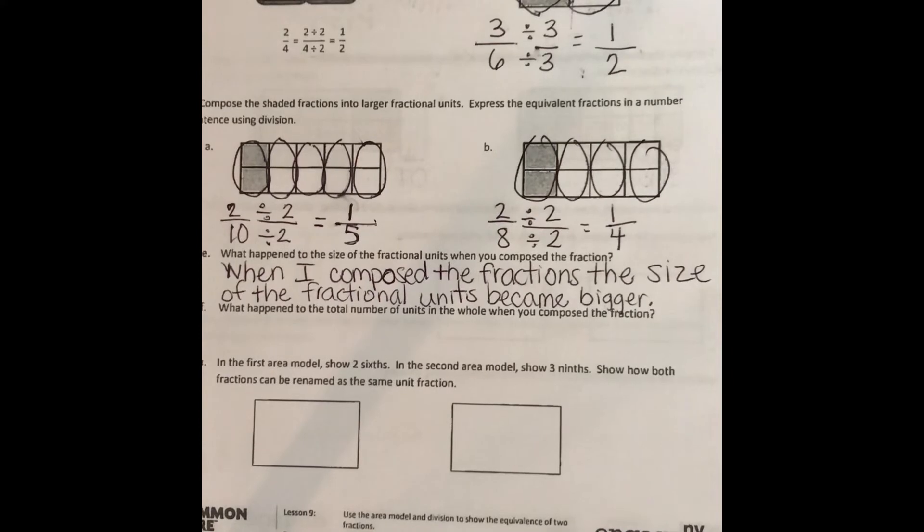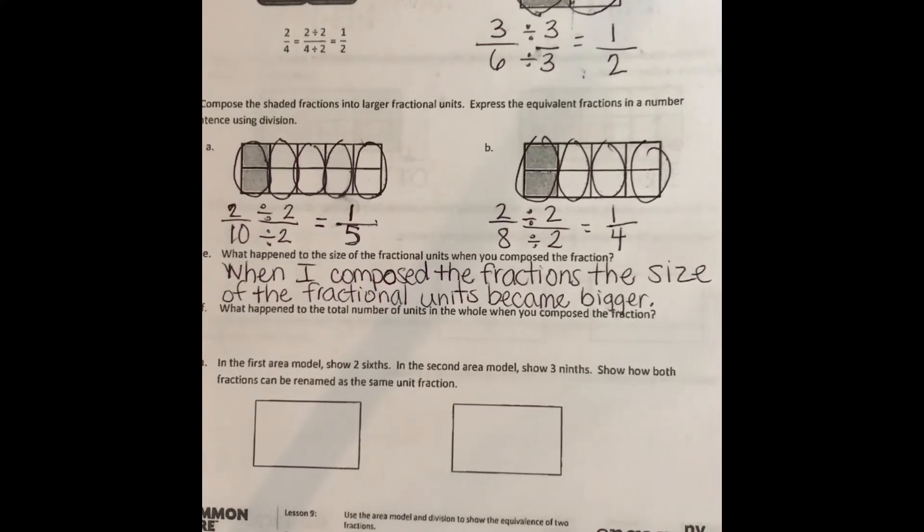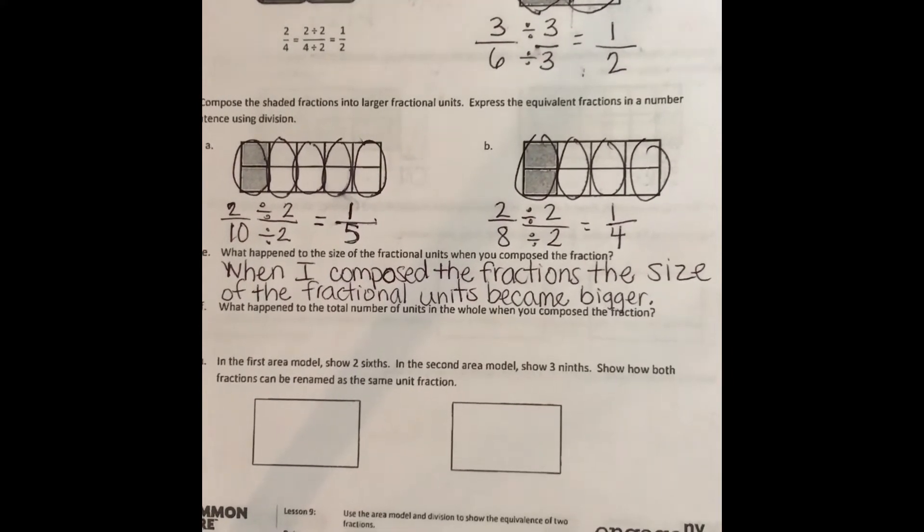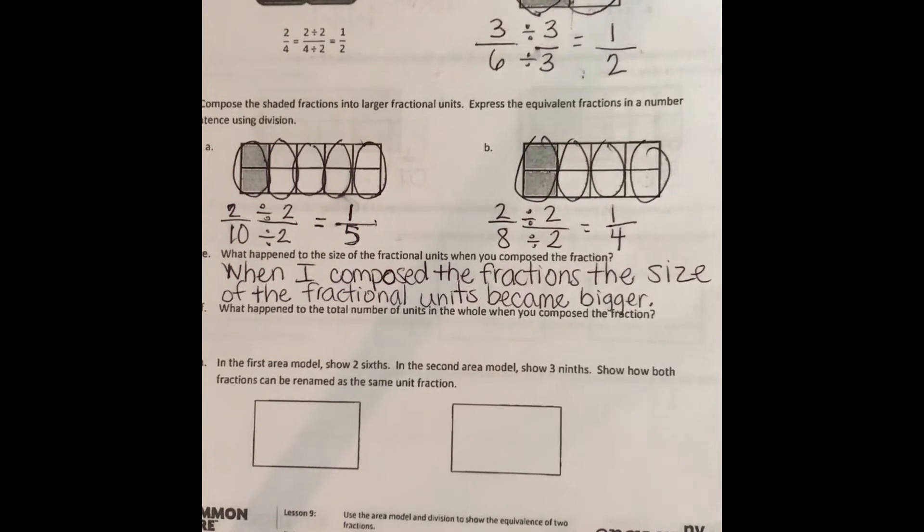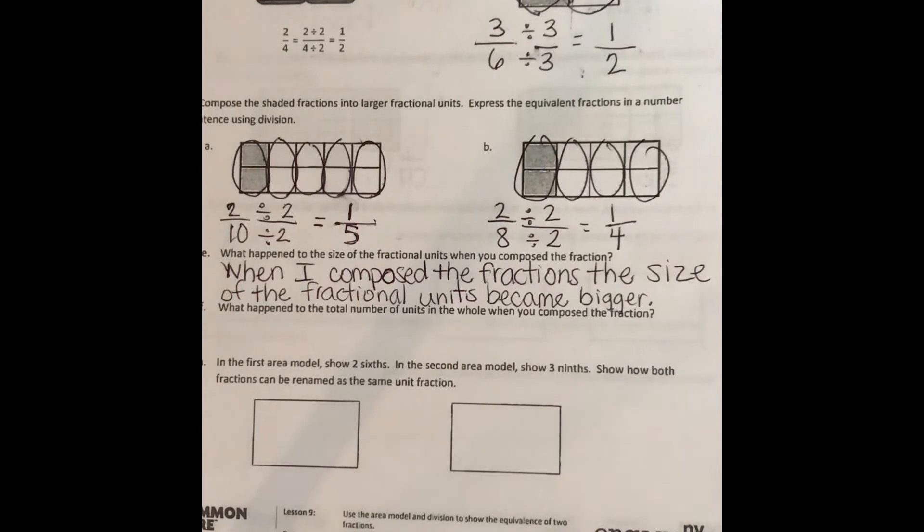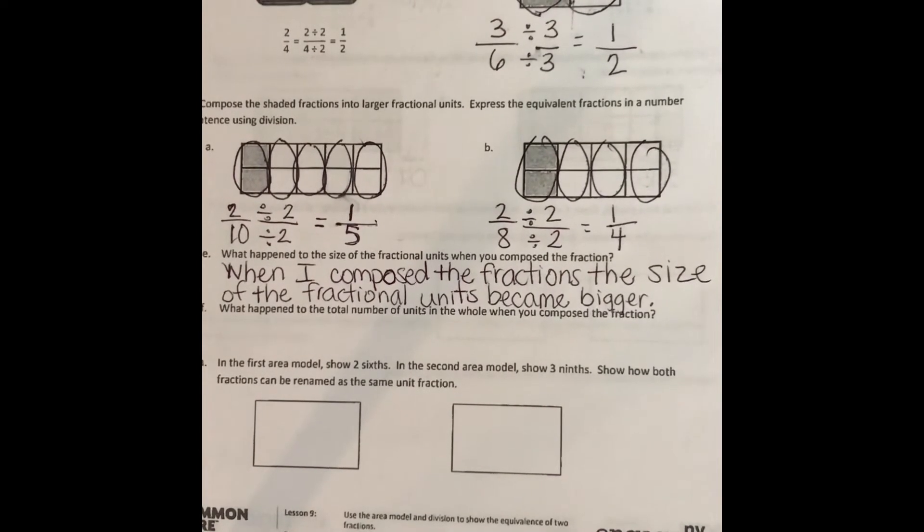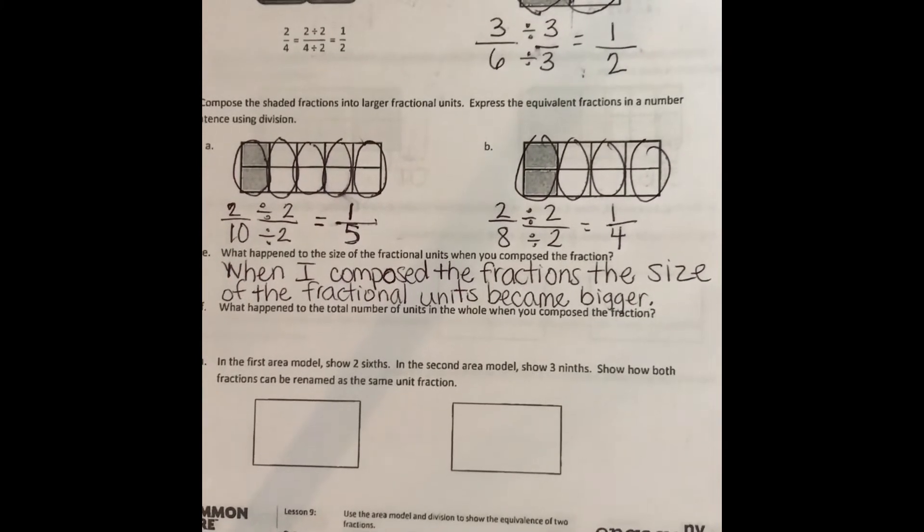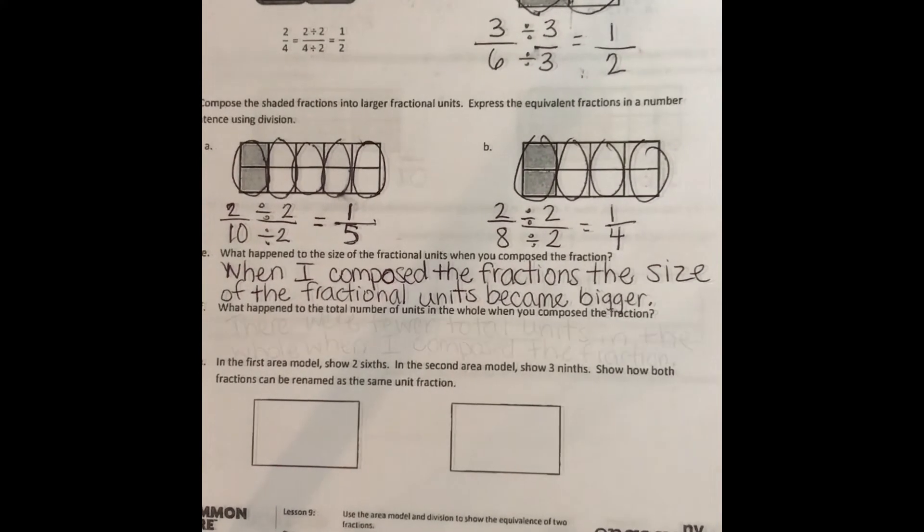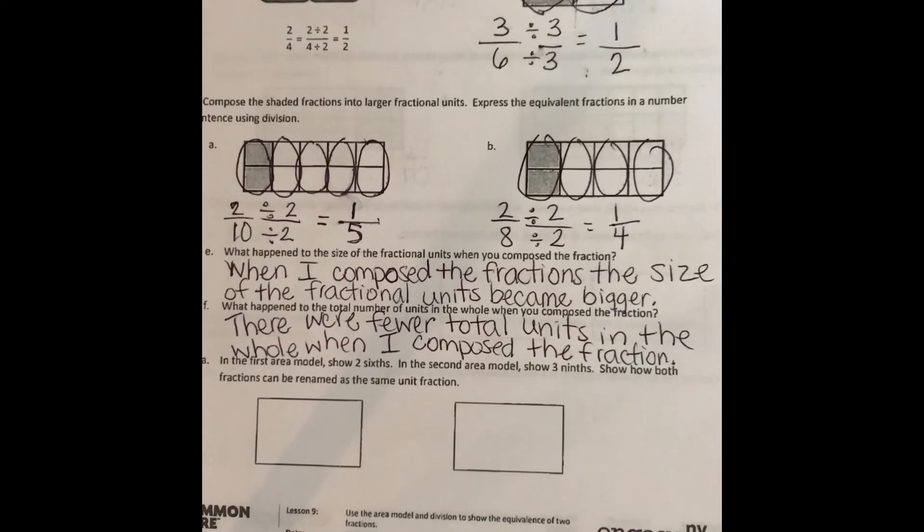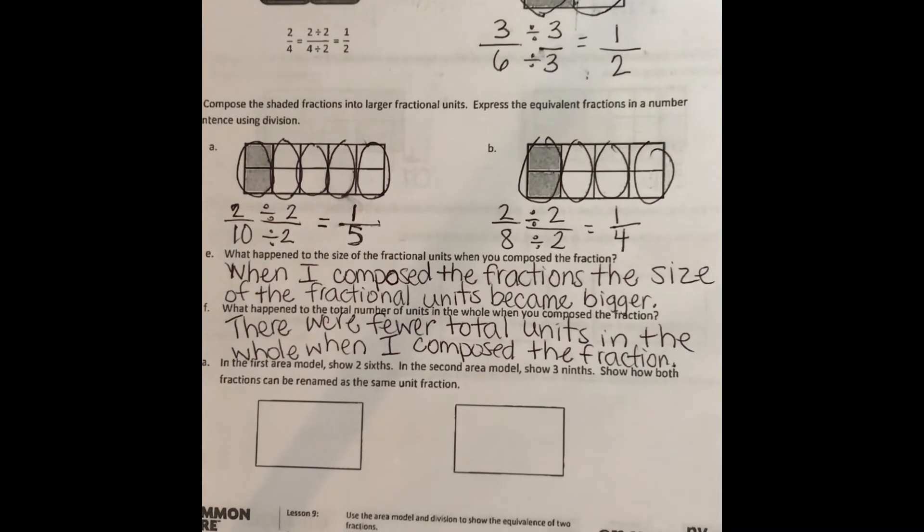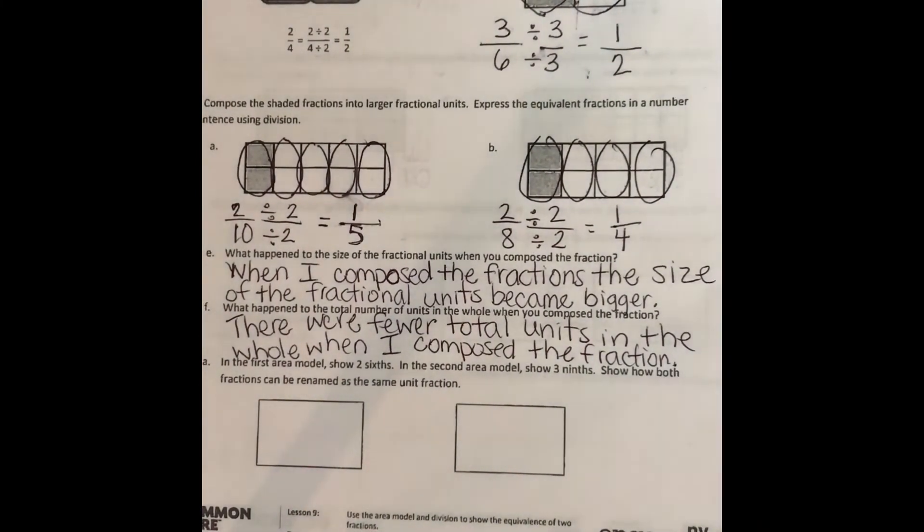Let's move on to F. What happened to the total number of units in the whole when you composed the fraction? So when we composed the fraction, there were actually fewer units, right? The units became fewer. So I'm going to pause my video, write my sentence, and check back with me after you write yours. Make sure it's a complete sentence. There were fewer total units in the whole when I composed the fraction.